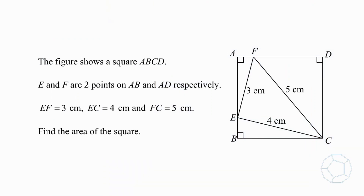The figure shows a square ABCD. E and F are two points on AB and AD respectively. EF is 3 cm, EC is 4 cm, and FC is 5 cm. Find the area of the square.